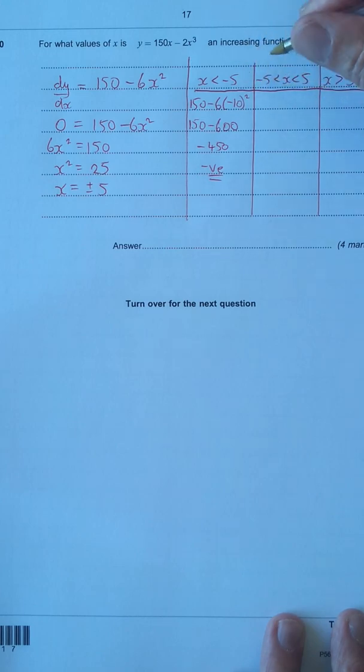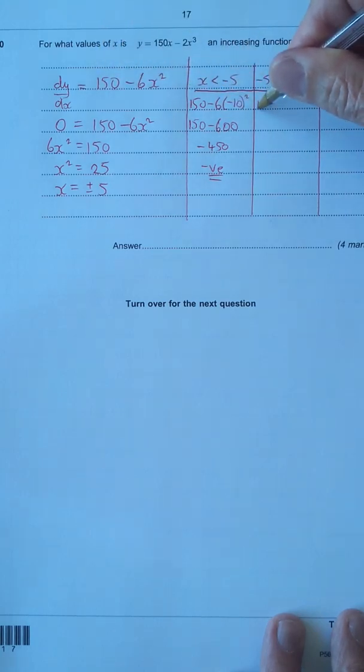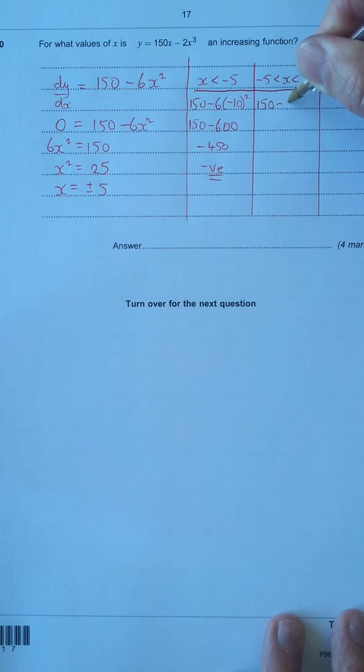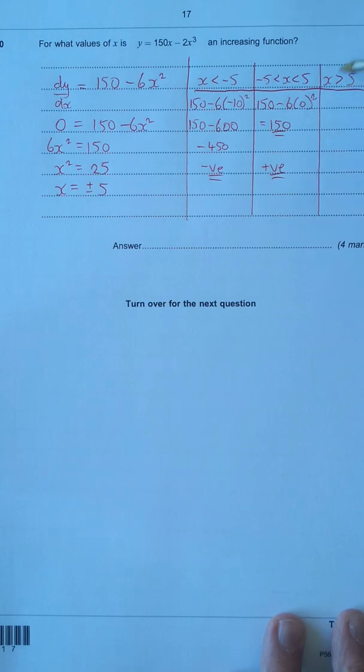Let's look at the middle one. A value between minus 5 and 5, well the easiest value is 0, so I'm just going to put that into here, into the differential. So we've got 150 minus 6 times 0 squared, and we'll go straight to the answer, you can see 6 times 0 squared is 0, so that equals 150. And 150 is positive, so that means we have got an increasing function. Now we'll check the last one.